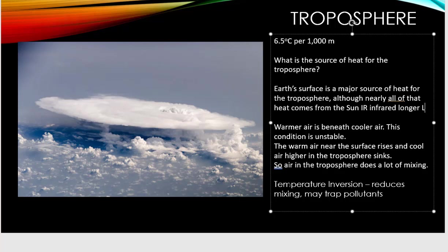One of the problems with temperature inversion, especially in coastal cities with lots of pollution, is that because there's little mixing, smog and exhaust end up being trapped at lower elevations, making for these smoggy days. That's one of the issues with temperature inversion.